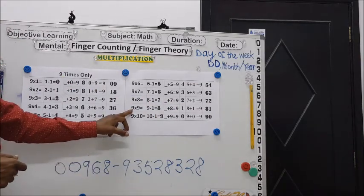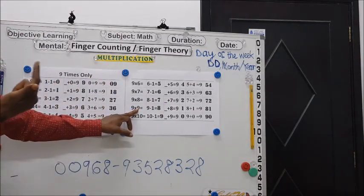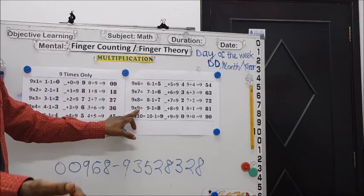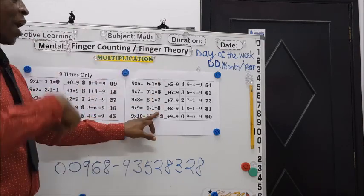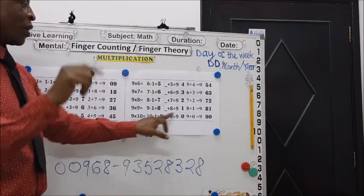9 times 9: that means 9 take away 1, that is 8. What number should I add to 8 and I'll get 9? 1. So 81.